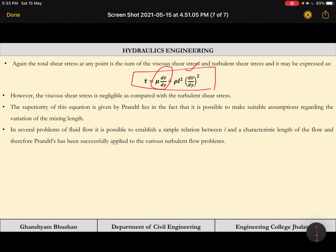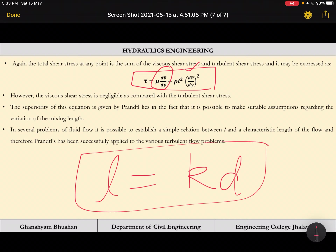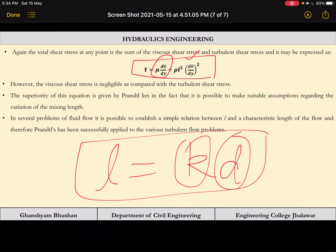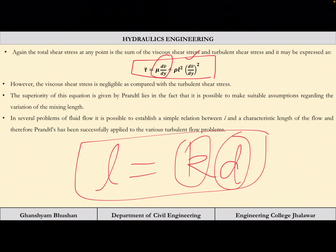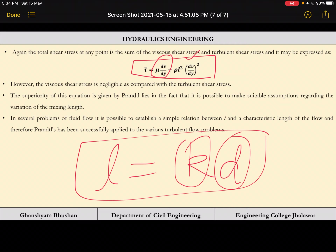The superiority of this equation given by Prandtl lies in the fact that it is possible to make suitable assumptions regarding the variation of mixing length. In several problems of fluid flow it is possible to establish a simple relation between l and a characteristic length of flow, and therefore Prandtl's theory has been successfully applied to various turbulent flow problems. In the next lecture we will see how to calculate τ and also study the velocity variation.